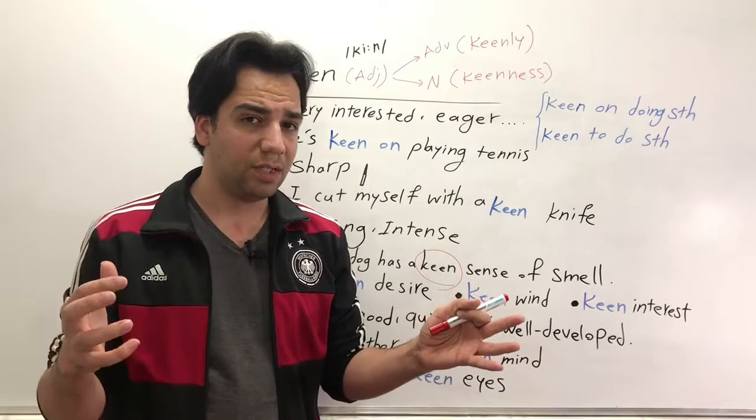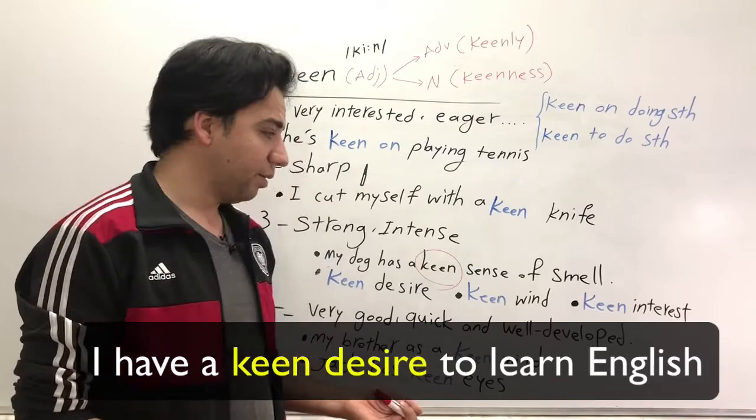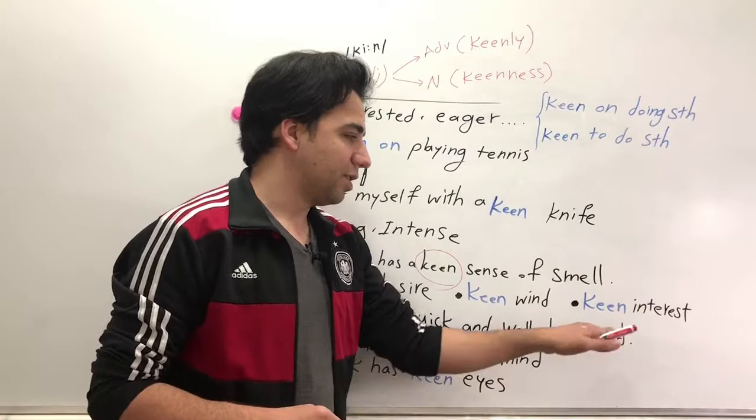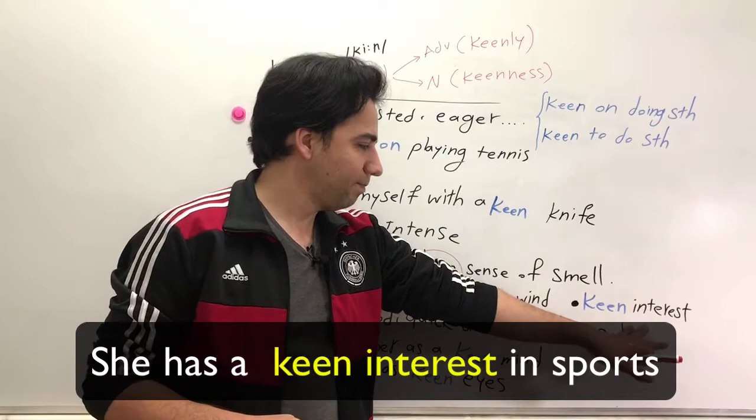Or we can say keen desire, keen wind, or keen interest. Keen desire means a very strong interest and desire. For example, I have a keen desire to learn English. Keen wind means a very strong wind that can break the windows. And keen interest again means a strong interest. For example, we can say she has a keen interest in sports.